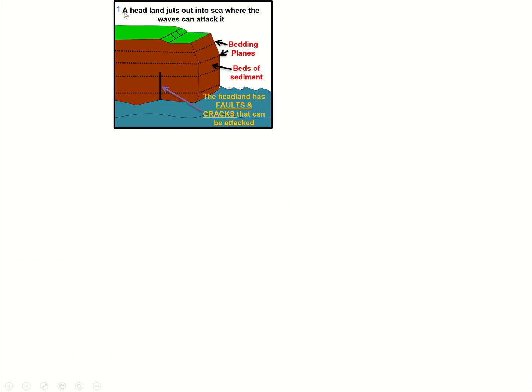We've got a headland jutting out to sea where the waves can attack it. Within the headland you might have vertical faults and cracks that can be attacked by the power of the waves by erosive processes. We may have beds of sediment, in the case of Old Harry Rock that's beds of chalk laid down under the sea, and then the lines in between are called bedding planes.